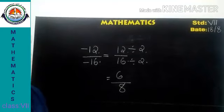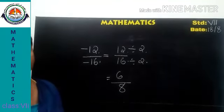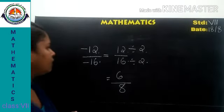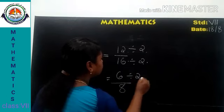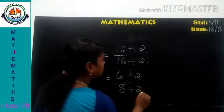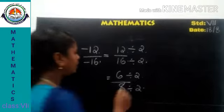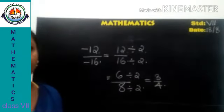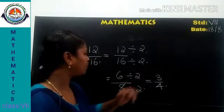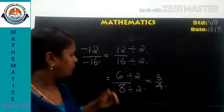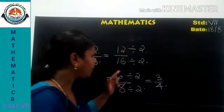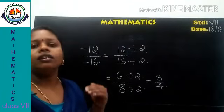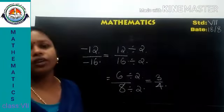Continuing with 6 by 8: we can further simplify by dividing by 2 — 6 divided by 2 is 3 and 8 divided by 2 is 4 — giving 3 by 4. So the standard form of 6 by 8 is 3 by 4.